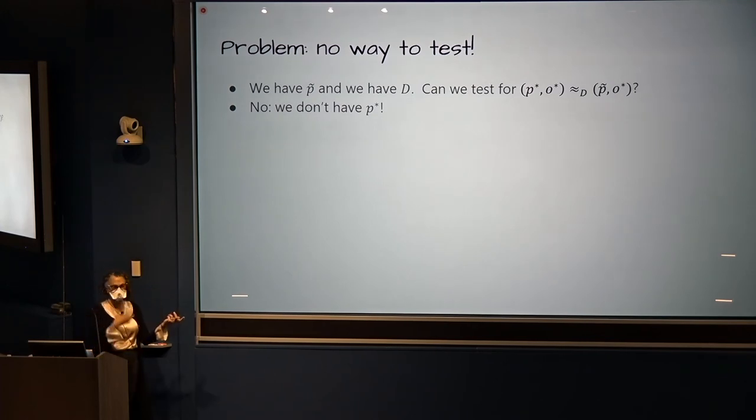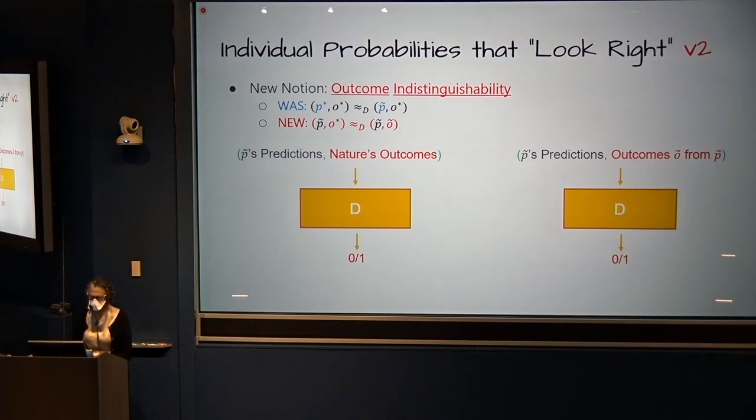We have a predictor because we built one. And we have a distinguisher because it's sitting on a shelf. And we want to know, is it the case that we have prediction indistinguishability? Can we test? And the answer is no. Of course we can't test. Nature doesn't tell us what its probabilities are. We don't even know if they're non-integer. We can never get our hands on those p*s. So we can't test this. So how do we handle this?